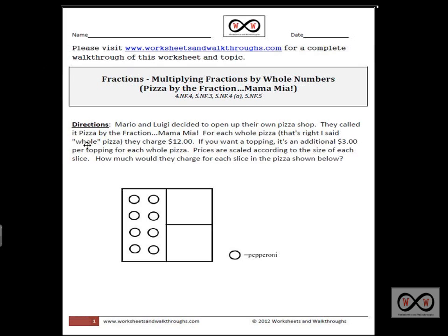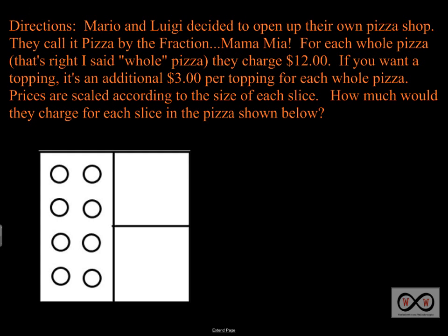We have some directions in the form of a word problem. Mario and Luigi decided to open up their own pizza shop. They call it pizza by the fraction, mamma mia. For each whole pizza, they charge $12. If you want a topping, it's an additional $3 per topping for each whole pizza. Prices are scaled according to the size of each slice. How much would they charge for each slice in the pizza shown below? The circles represent pepperoni on that pizza.